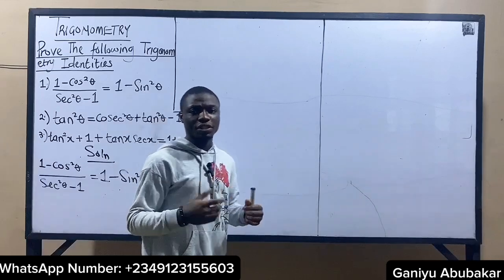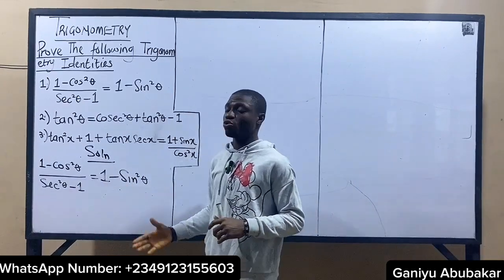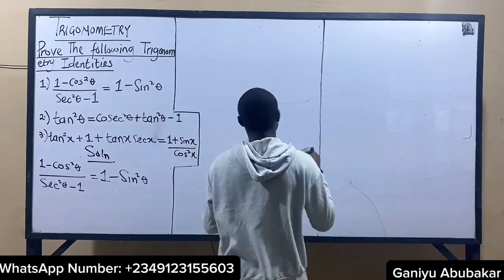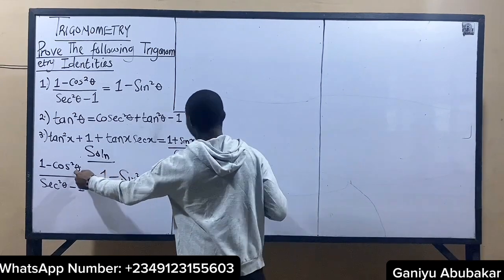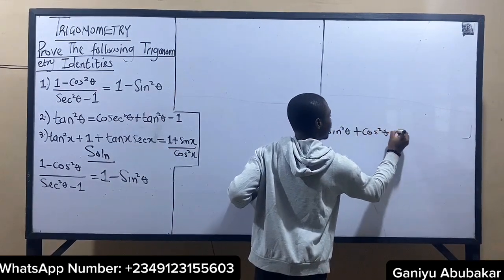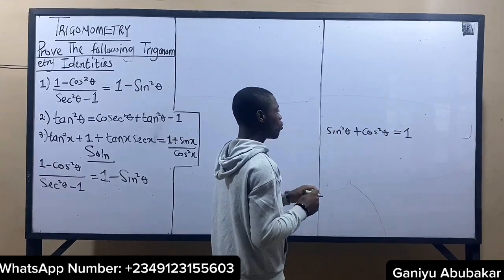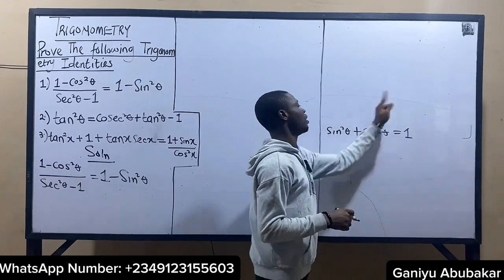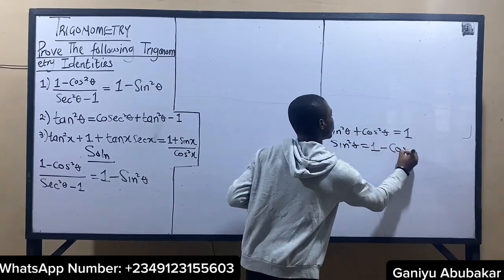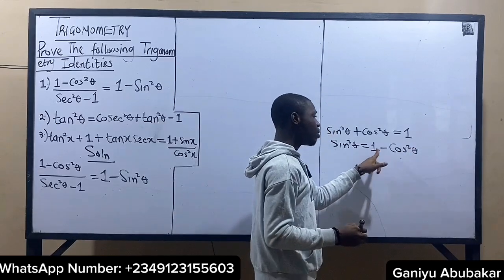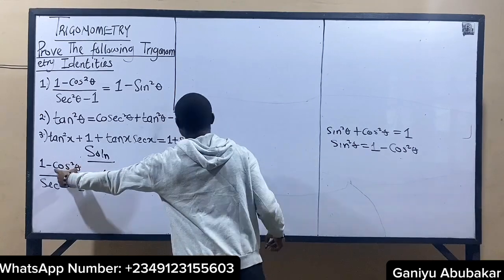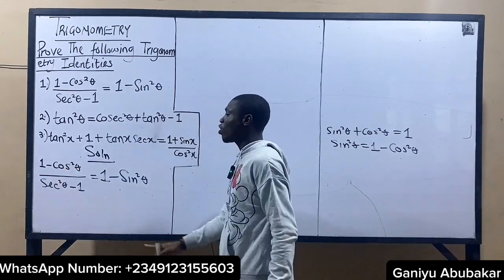Let's try to prove the left-hand side being equal to the right-hand side. From trigonometry, we know that sin squared theta plus cos squared theta is equal to 1. So if I take cos to the other side, I'll have that sin squared theta is equal to 1 minus cos squared theta. So whenever I see 1 minus cos squared theta, I'll replace it with sin squared theta.